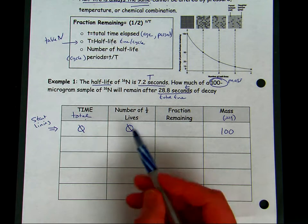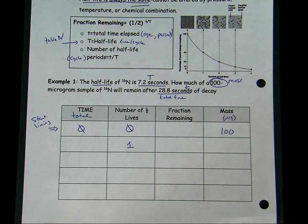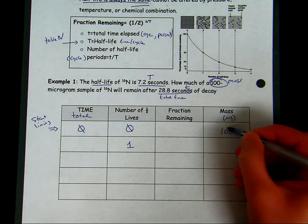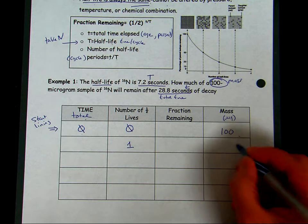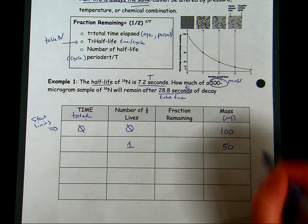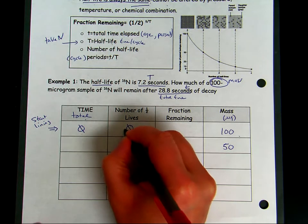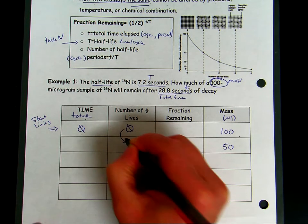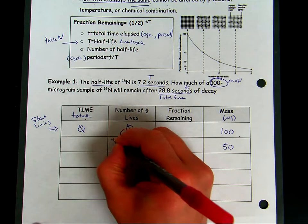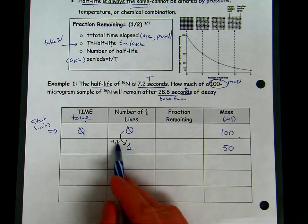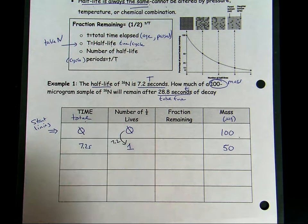At some point the sample will go through its first half-life cycle. At that first half-life cycle, there's no longer 100 micrograms of the radioactive sample. It's been cut in half, so now there's only 50 micrograms of the radioactive sample. To go from zero cycles to one cycle, that's where we use our value T. It took 7.2 seconds, so that means that now 7.2 seconds of total time has passed from zero cycles to the first cycle.